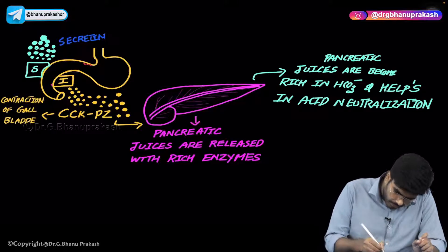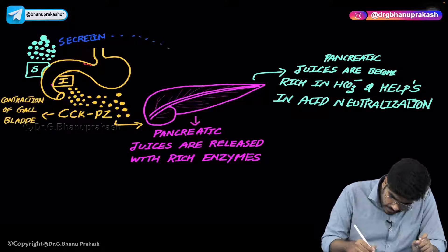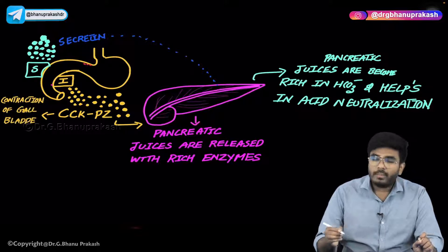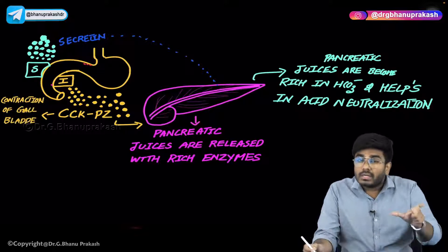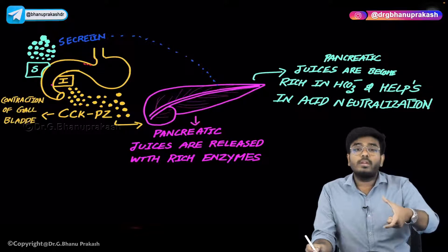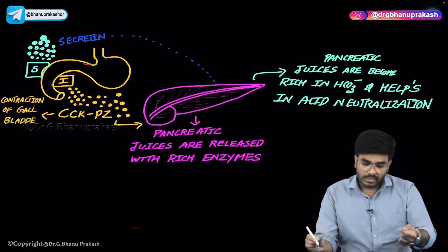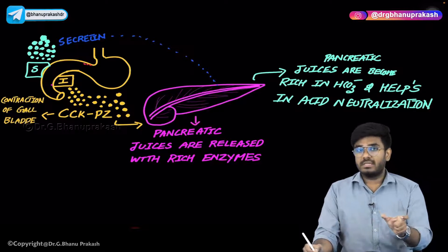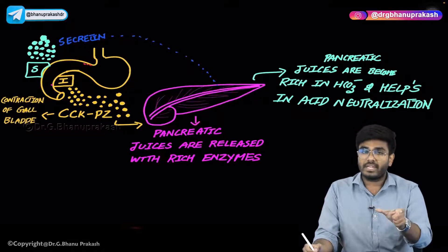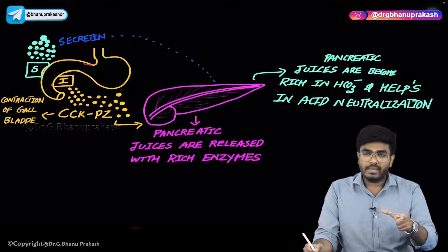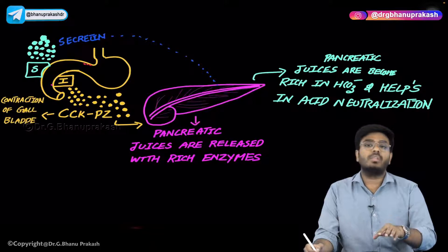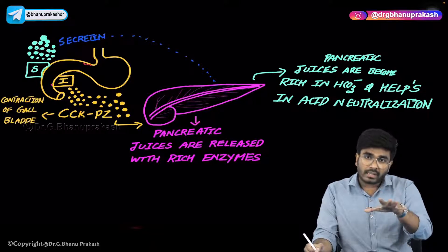When secretin molecules come and act on the pancreas, secretin acts on pancreatic juices — under the influence of secretin, the pancreatic juices become more alkaline and rich in bicarbonates. These bicarbonates help in neutralization of acids. The pH of 8.3 in pancreatic juices comes because secretin from the S cells acts on the pancreas, causing more bicarbonates to be added to the pancreatic juices.